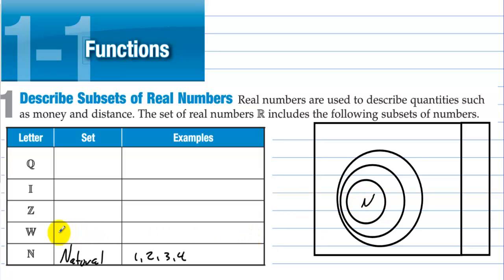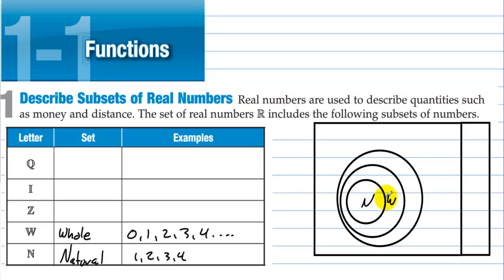Then we have the whole numbers. Whole numbers are the naturals and they include zero: zero, one, two, three, four, keep on going. So we have the whole numbers, which includes all the naturals and one more number, which is zero.